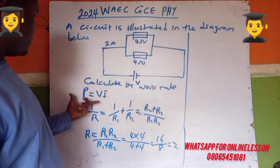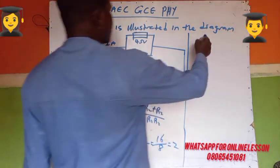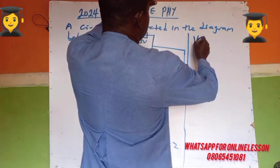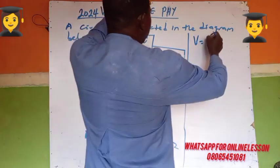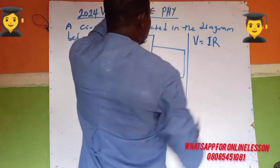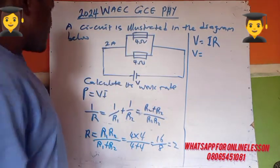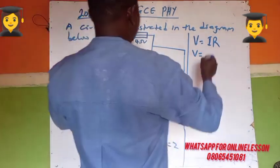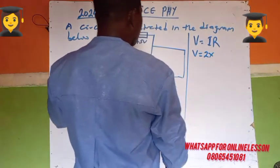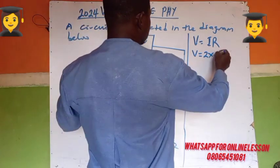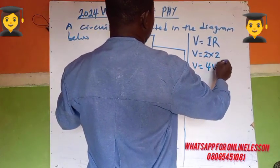Then you need to find V. Ohm's Law states that V equals R times I. I is 2 amps and the equivalent resistance is 2 ohms, so V equals 4 volts.